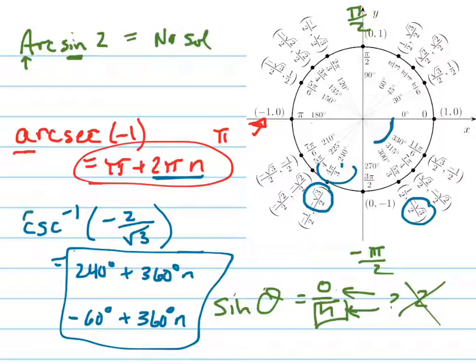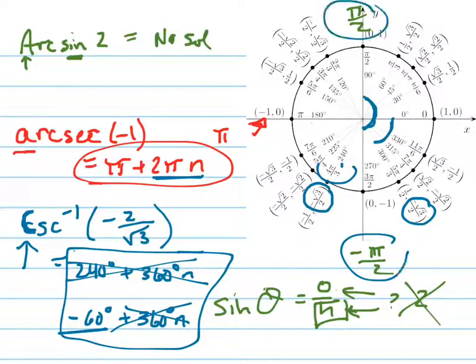Now, if this was a capital C here, the answer would be only negative 60 degrees, because the capital C means that you're only looking at the range between negative pi over 2 and positive pi over 2. The capital C signifies, in some textbooks, that it's a function that they're looking for. Functions need to pass the vertical line test, and it wouldn't pass the vertical line test if you kept going around and around.